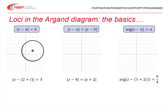Here are three basic examples that you should already be familiar with. The first one is the modulus of z minus a is equal to some constant k. In my example, I've got the modulus of z minus 2 plus i. So if I mark the point 2 plus i on the Argand diagram, the modulus of z minus 2 plus i simply means the distance of our point from 2 plus i. I want all points that are a distance 3 away from 2 plus i, and I end up with a circle centre 2 plus i radius 3.